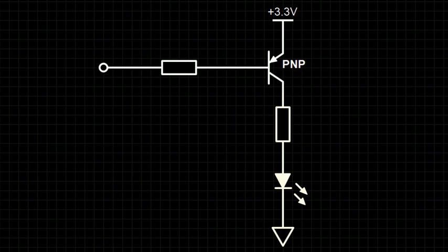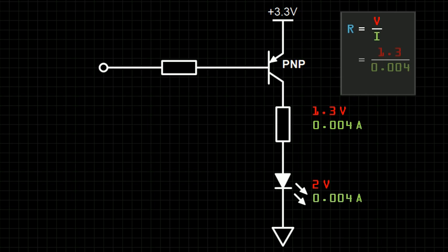First we need to analyze the collector side of the transistor. Here I'm using a red LED that needs approximately 2 volts at 4 milliamps. That means that a resistor needs to be included to use the remaining 1.3 volts at the same 4 milliamps. With this information, we can use Ohm's law to calculate the resistance of the resistor, which at 325 ohms is close to the standard 330 ohm resistor.